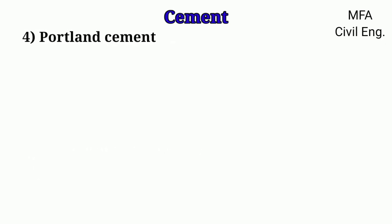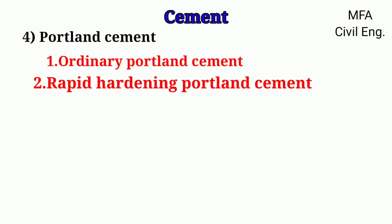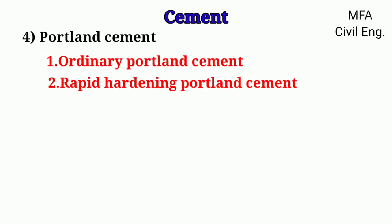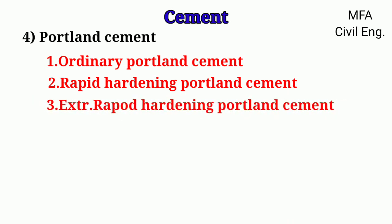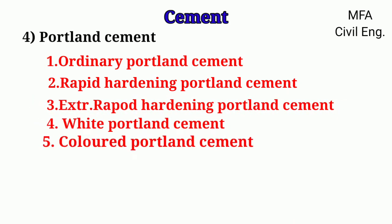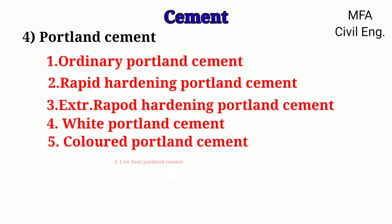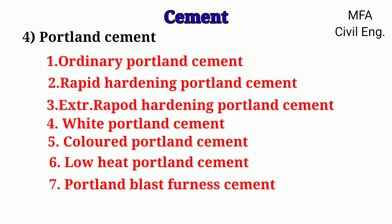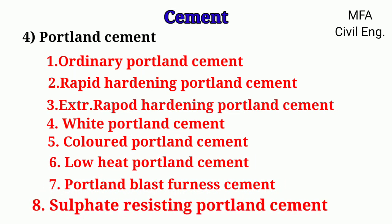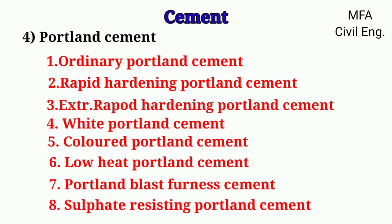Cement is further classified into various types like ordinary Portland cement, rapid hardening Portland cement, extra rapid hardening Portland cement, white Portland cement, colored Portland cement, low heat Portland cement, Portland blast furnace cement, and sulphate resistance Portland cement.